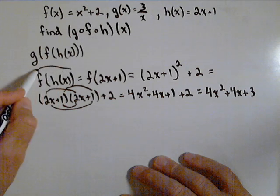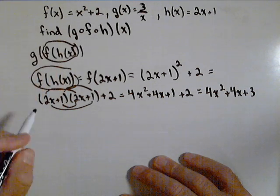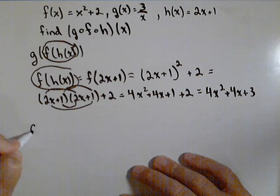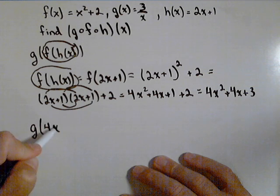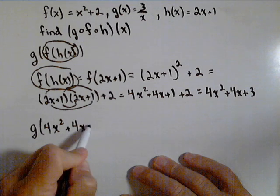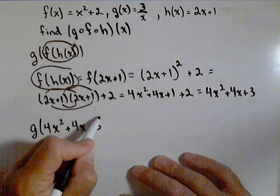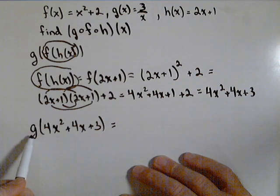Now, this is what's going into g for our triple composition. So what I'm actually looking for when I'm looking for g of f of x is g of four x squared plus four x plus three. Now, remember what g says.